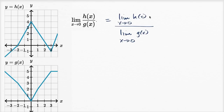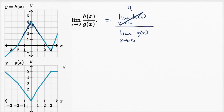Now what's the limit of h of x as x approaches zero? As we approach x equals zero from the left, our function seems to be approaching four. And as we approach x equals zero from the right, our function also seems to be approaching four. That's also what the value of the function is at x equals zero, which makes sense because this is a continuous function. So this top value is going to be four.